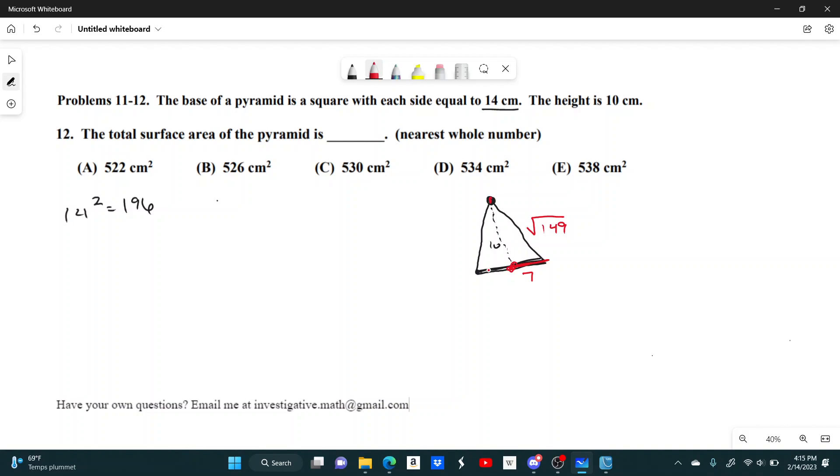Now, what this tells you is the height of the triangles that we're trying to find on the outside. So one of those triangles will have an area of 1/2 times the base of that triangle, which will just be the same as the side length. So 1/2 times 14, and then multiply it by the height, which is the square root of 149. And there's four of those, one for each side.